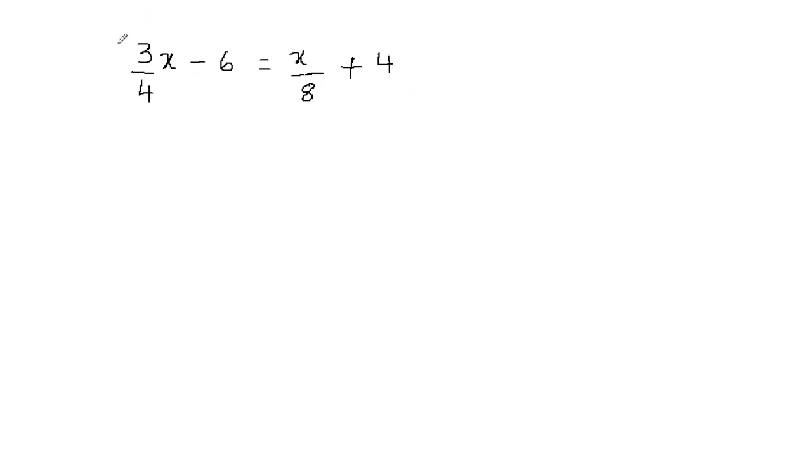I'm going to put the parentheses here and then multiply the whole equation by 8. That means I have to multiply all the terms by 8. So first, let's write 8 times 3/4x minus 6 times 8, equals x/8 times 8, plus 4 times 8. That means we multiply all our terms inside the parentheses by 8.